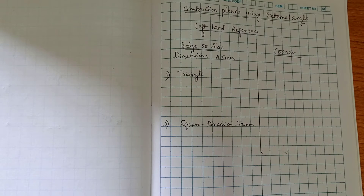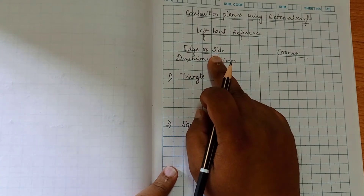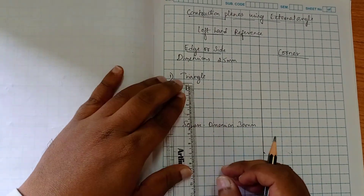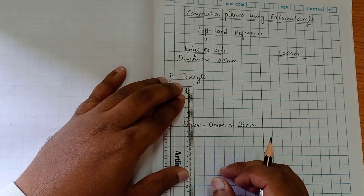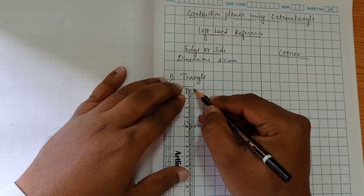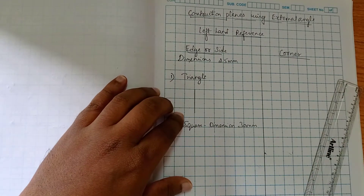If the first position is a constructed triangle with respect to edge, what will be your first position? Construct a square with respect to corner — what will be your first position? First we look at a triangle of dimension 25 mm. It is with respect to the edge, so we will take 25 mm. You can see and mark it — constructing the edge of dimension 25.